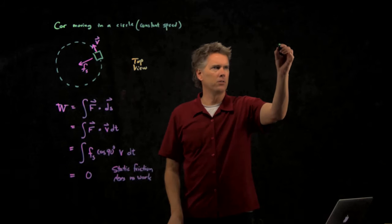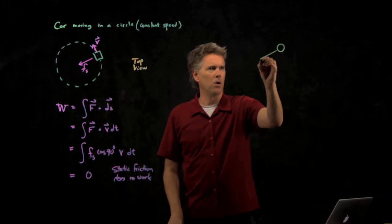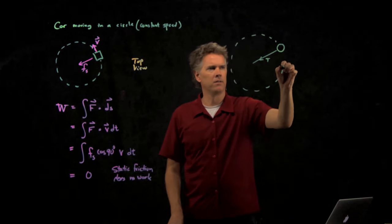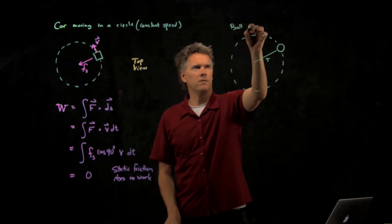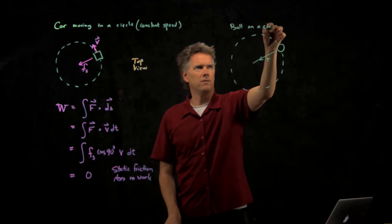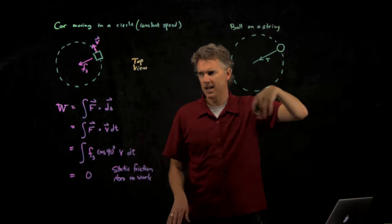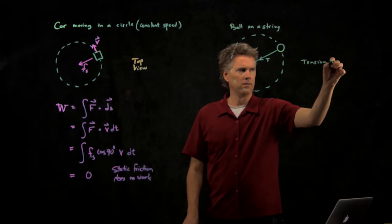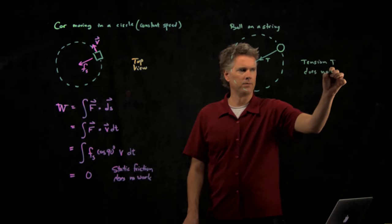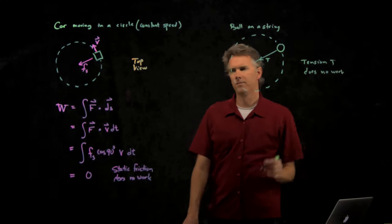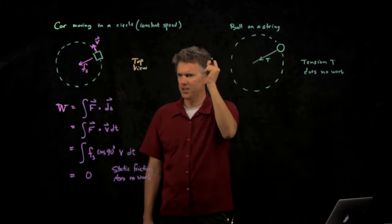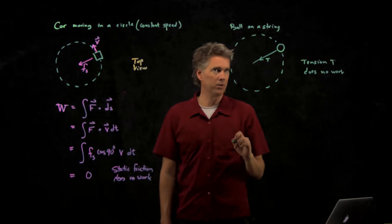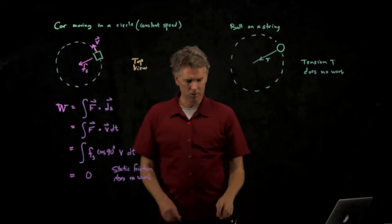And here's kind of the cool general idea. If you have an object that's moving in a circle, like a ball on a string, and there's tension in that string, and this thing is moving around at constant speed, then the tension T does no work. If this is the top view of the ball going around, the tension T doesn't do any work either, which means the ball doesn't speed up or slow down.